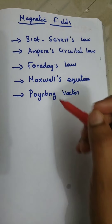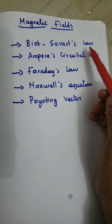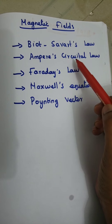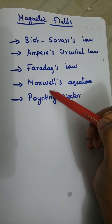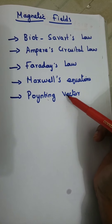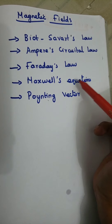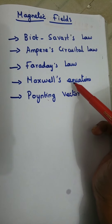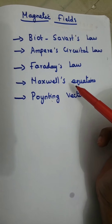In this video we will see about Biot-Savart law, Ampere's Circuital law, Faraday's law, and Poynting vector. We will see about Maxwell's equations in the next video.